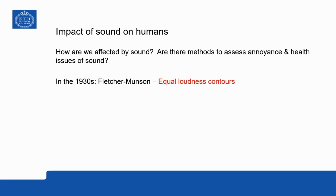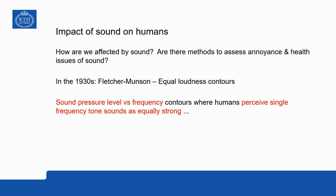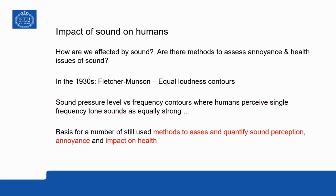Already in the 1930s, the Fletcher and Munson equal loudness contours were developed. The equal loudness contours are basically sound pressure level versus frequency plots that show how humans perceive a single frequency tone as equally strong as a reference tone. These equal loudness contours are actually still used in a number of very commonly used methods to assess and quantify how we perceive sound.